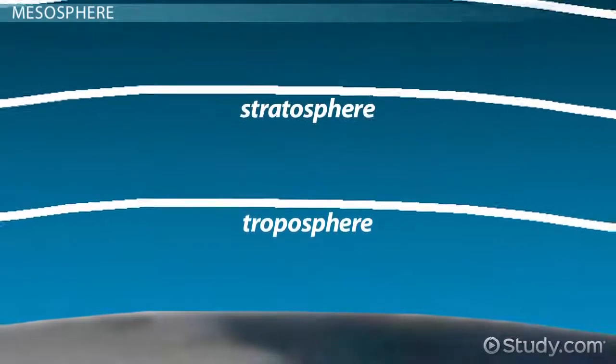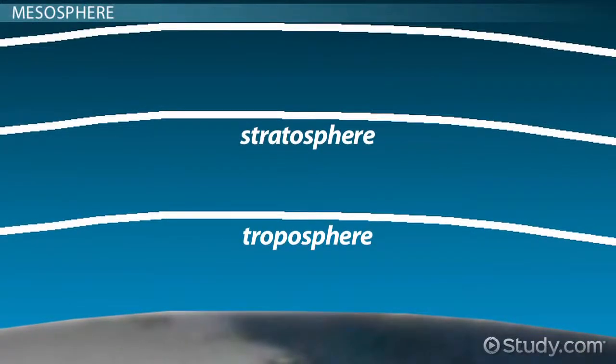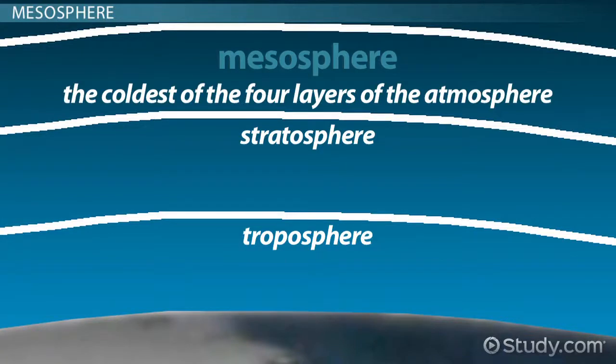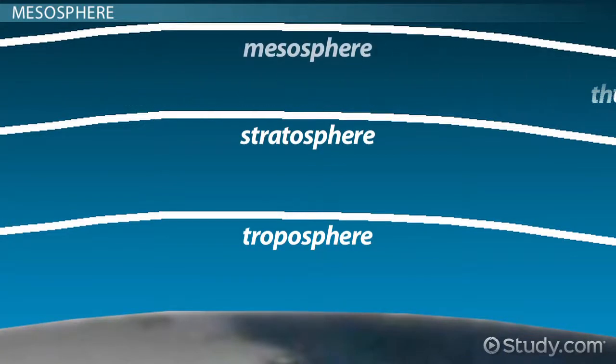I hope you remembered to dress warmly for the next layer of the atmosphere. The mesosphere comes next, and it is the coldest of the four layers of the atmosphere. It's too far up to benefit from the warmth-catching abilities of the planet's clouds, but too far down to be warmed directly by the sun.